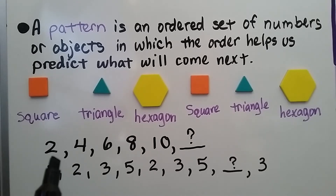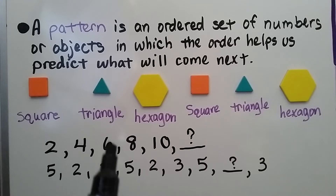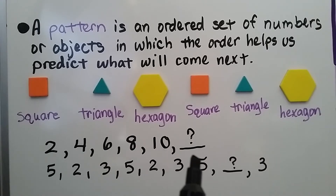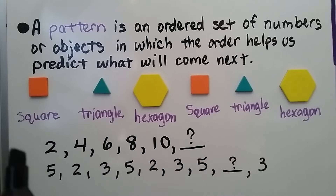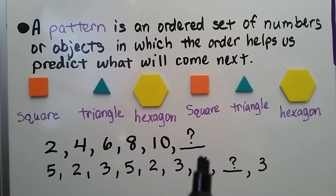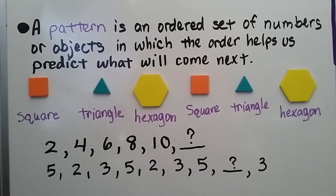Look at this — it's skip counting by 2's: 2, 4, 6, 8, 10. Do you know what would come next? 2 is being added to each previous number. If you said 12, you're right.